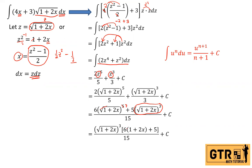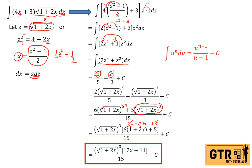Distributing: 6(1 + 2x) + 5 = 6 + 12x + 5 = 12x + 11. So our final answer is (√(1+2x))³ · (12x + 11) / 15 + C, or equivalently written with rational exponents: (1 + 2x)^(3/2) · (12x + 11) / 15 + C.